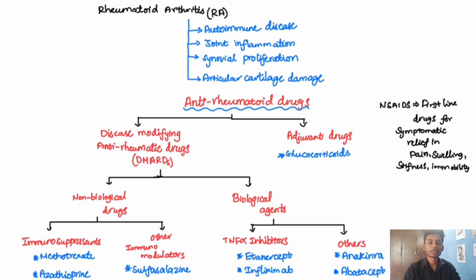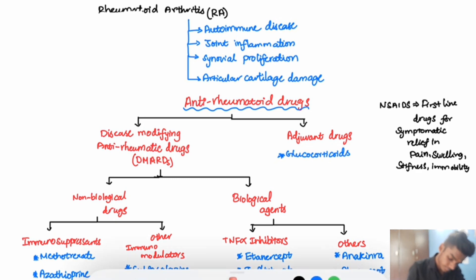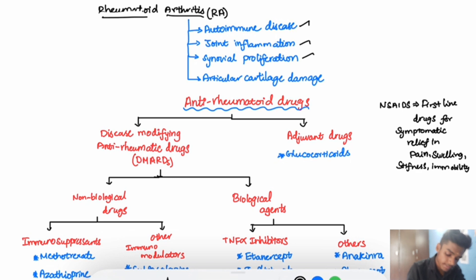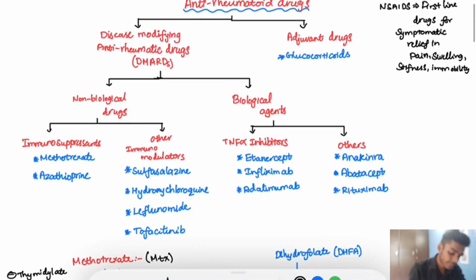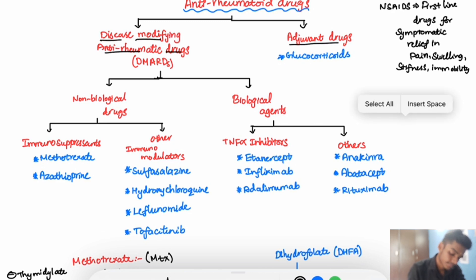Hello, Medicals. Today we are going to see about anti-rheumatic drugs. Rheumatoid arthritis is an autoimmune disease with joint inflammation, synovial proliferation, and articulocartilage damage. Anti-rheumatic drugs are classified into disease-modifying anti-rheumatic drugs and adjuvant drugs.